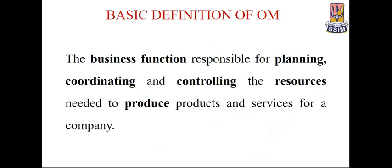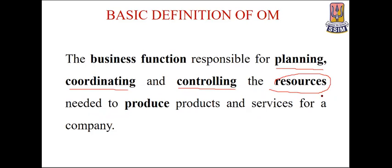The basic definition of operations management is: the business function responsible for planning, coordinating, and controlling the resources needed to produce products and services for a company. How much to produce, what is to be produced, and when to produce are all taken care of by planning, coordinating, and controlling. The resources include materials, machines, and other infrastructural resources.